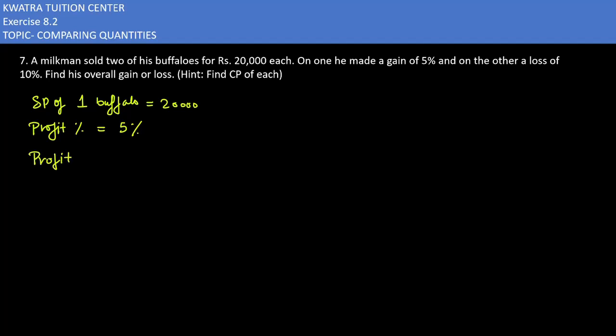Profit percent is given, so we use the profit percent formula. Profit percent equals profit over CP times 100. Profit is not given directly, so we need to substitute the profit formula here.